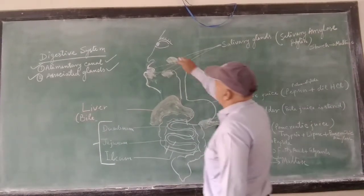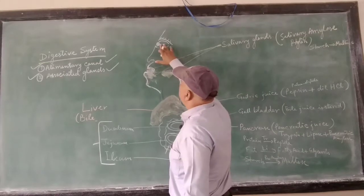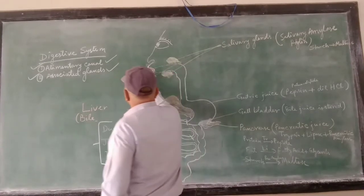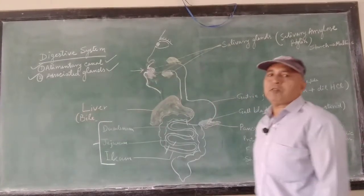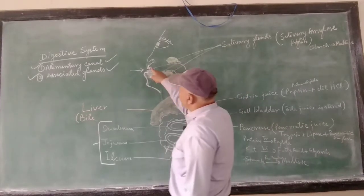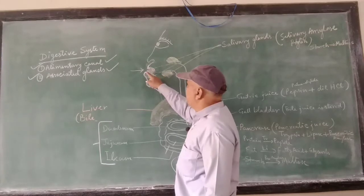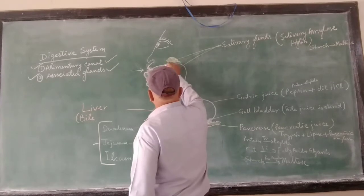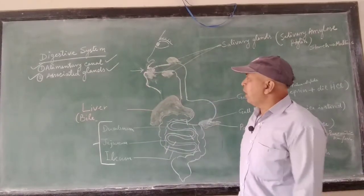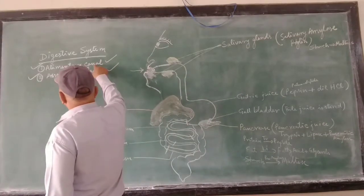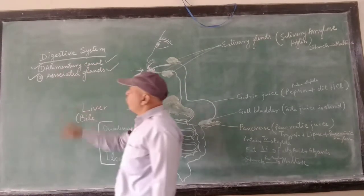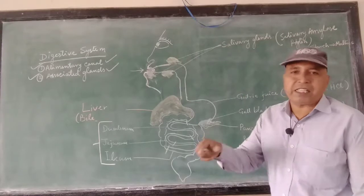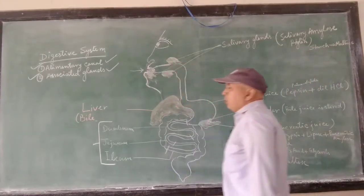Here you can see I have drawn the face — the eye, forehead, nose, and here is the mouth. This is the place from where the digestive system starts. We have already read about the teeth and the tongue. This passage I have drawn — this passage is the mouth cavity. First we will see the parts of the digestive system that make the alimentary canal. Canal means a passage, a passage for the food to be processed.